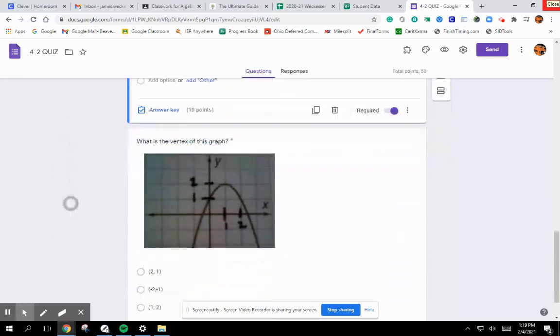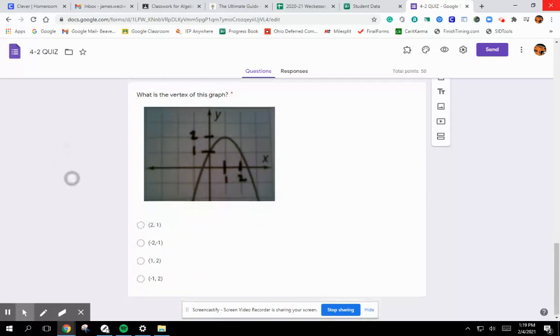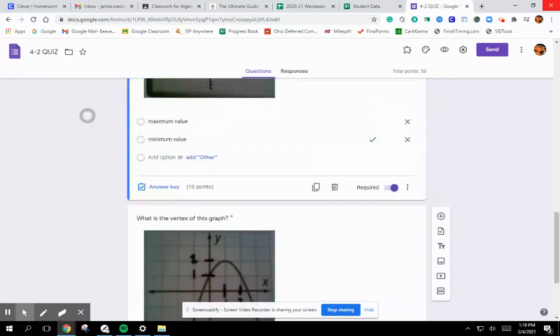One or two. And then what is the vertex of this graph? You need to look at the vertex and graph the point. One over and how many up? Graph it off. That's all you have to do. Five easy questions.